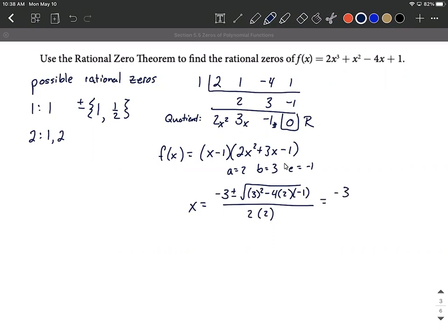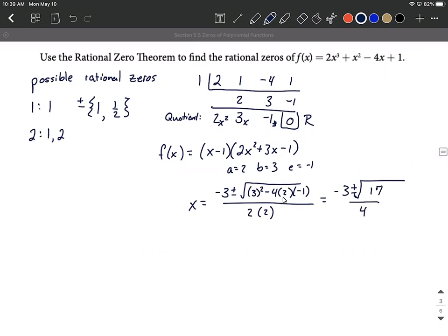So with a little bit of simplifying down here, I think we can find the rest of our zeros, even if they're not rational zeros. So this will make 9. Let me see, the double negative makes plus 8 more, makes 17 under here, all over 4.